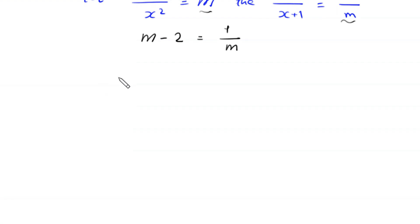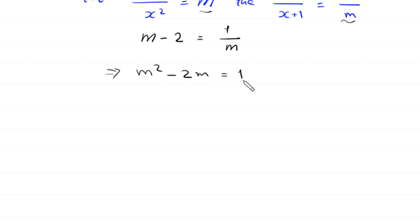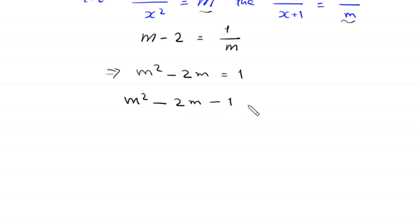Then this equation will become m minus 2 equals 1 over m. If we multiply both sides of this equation by m, this implies m squared minus 2m equals 1. If we move this 1 to the left hand side, then this equation will become m squared minus 2m minus 1 equals 0.